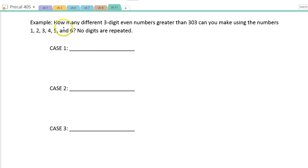Alright, so here's our second example. How many different three-digit even numbers greater than 303 can you make using the numbers 1, 2, 3, 4, 5, and 6?